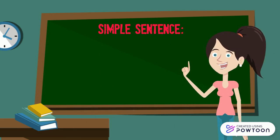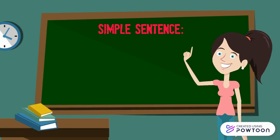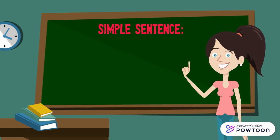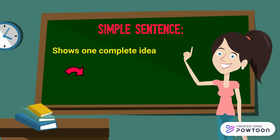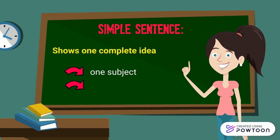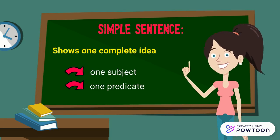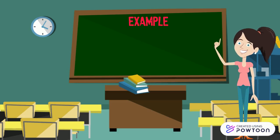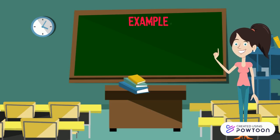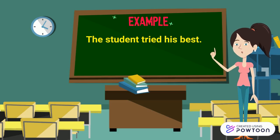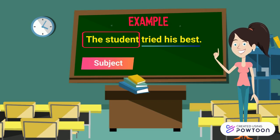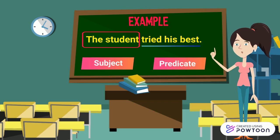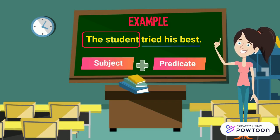Let's first recall what a simple sentence is. A simple sentence shows one complete idea. It has one subject and one predicate. Let's look at this simple sentence: "The student tried his best." The student is the subject and tried his best is the predicate. Together, they form a complete sentence called a simple sentence.